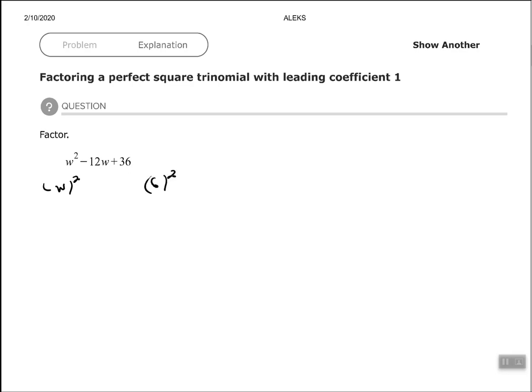So now I need to check the middle to make sure it matches up to our formula. Remember our formula says that if we have a squared minus 2 times a times b plus b squared, then it would factor to be a minus b squared.